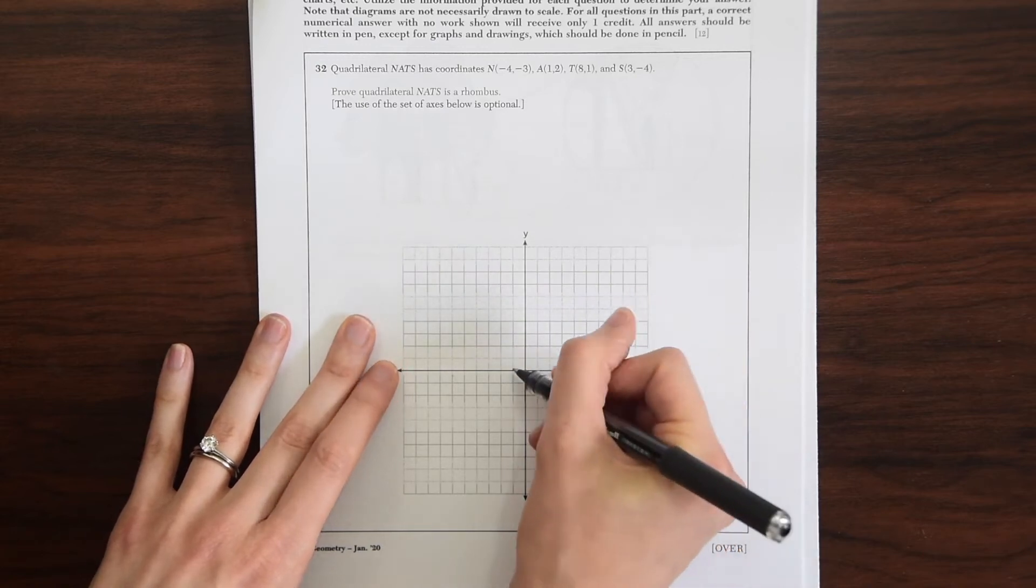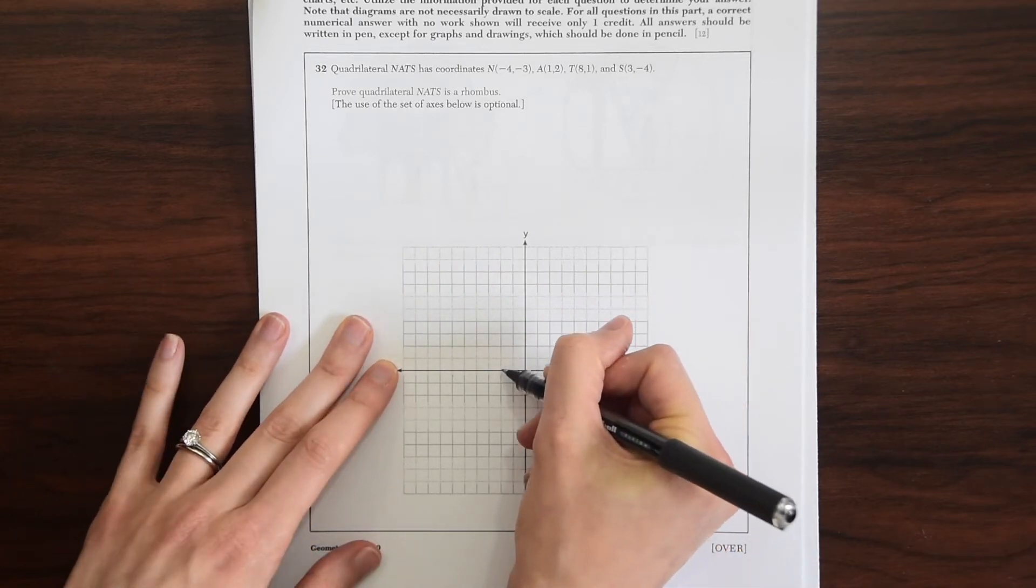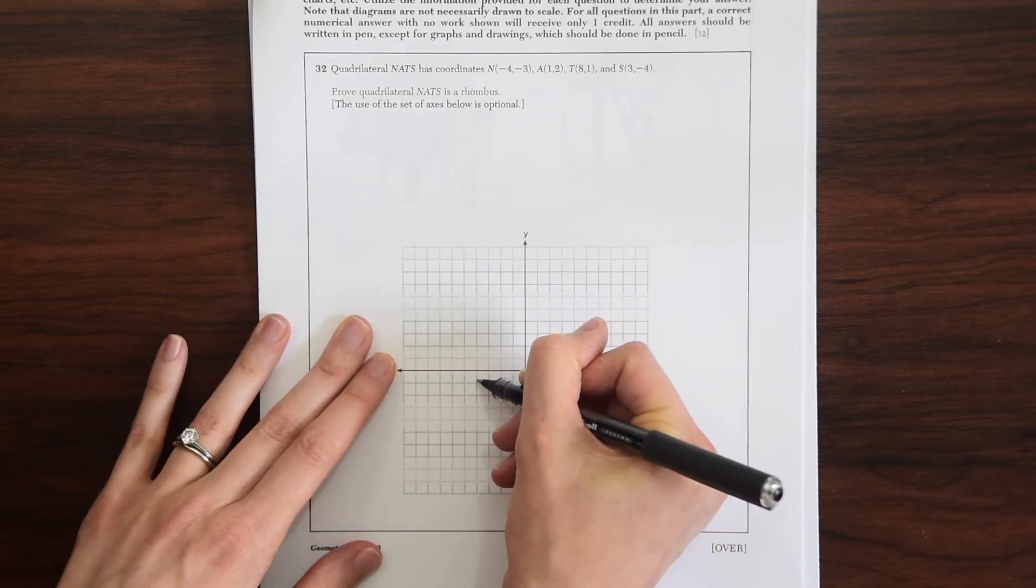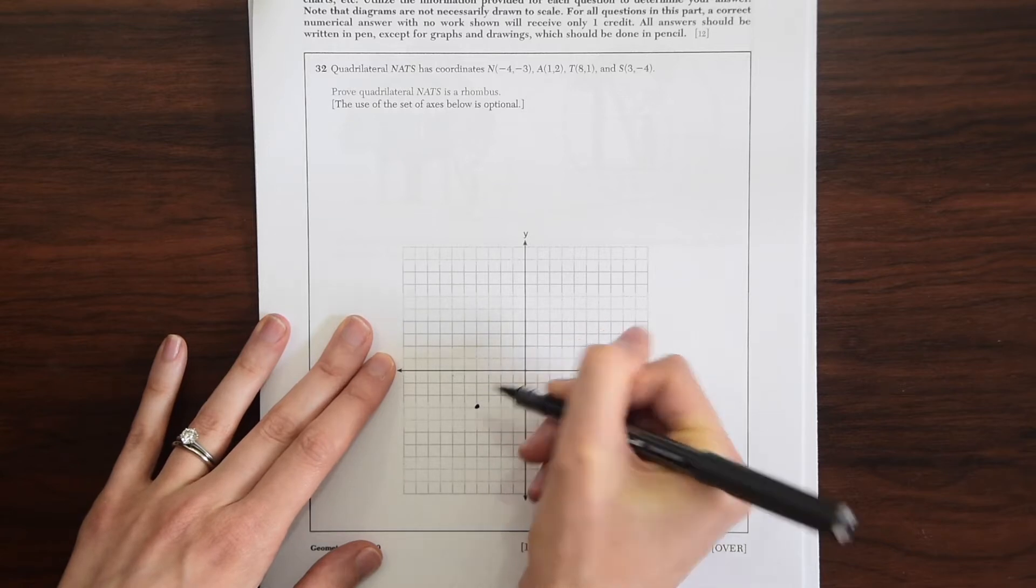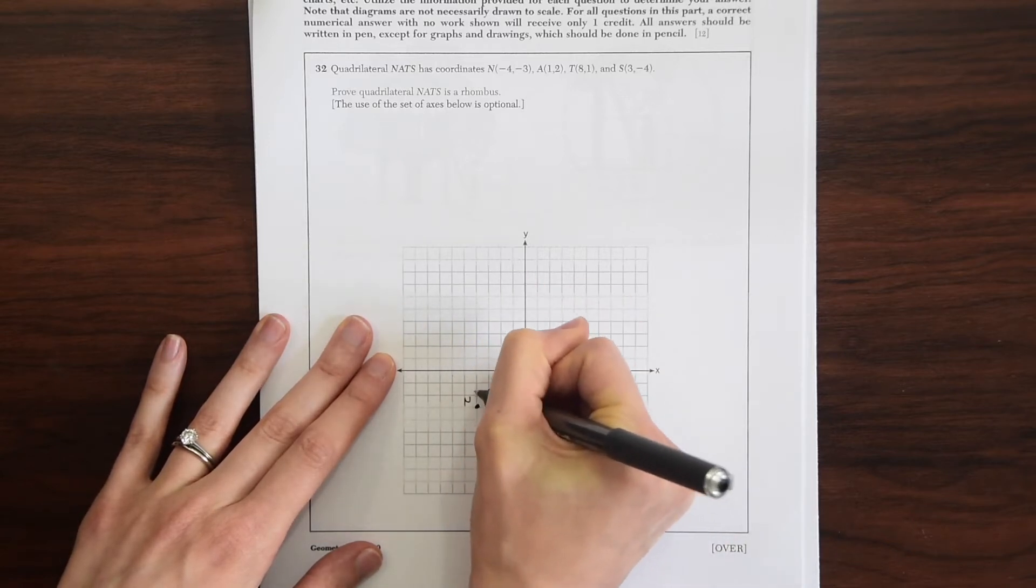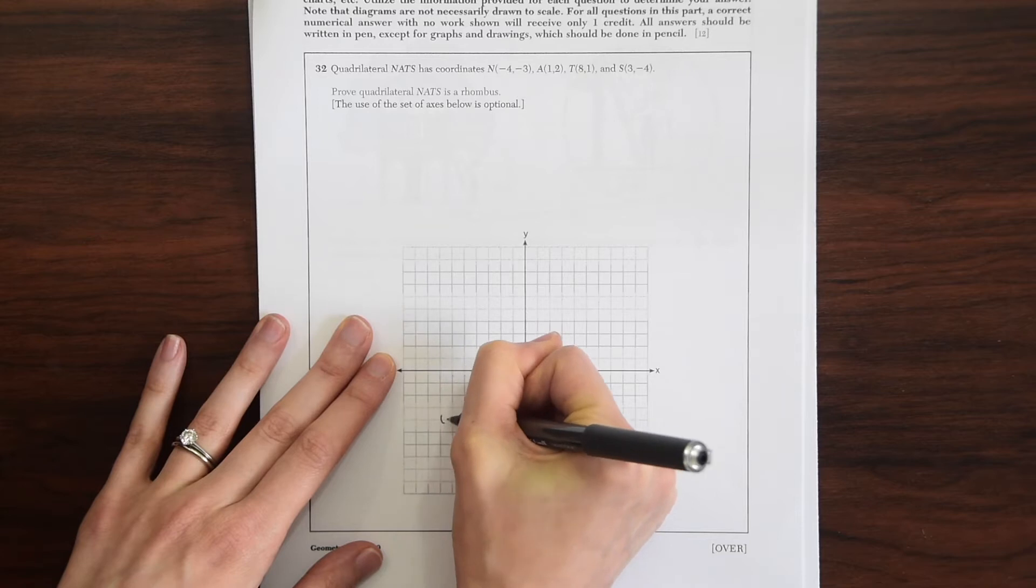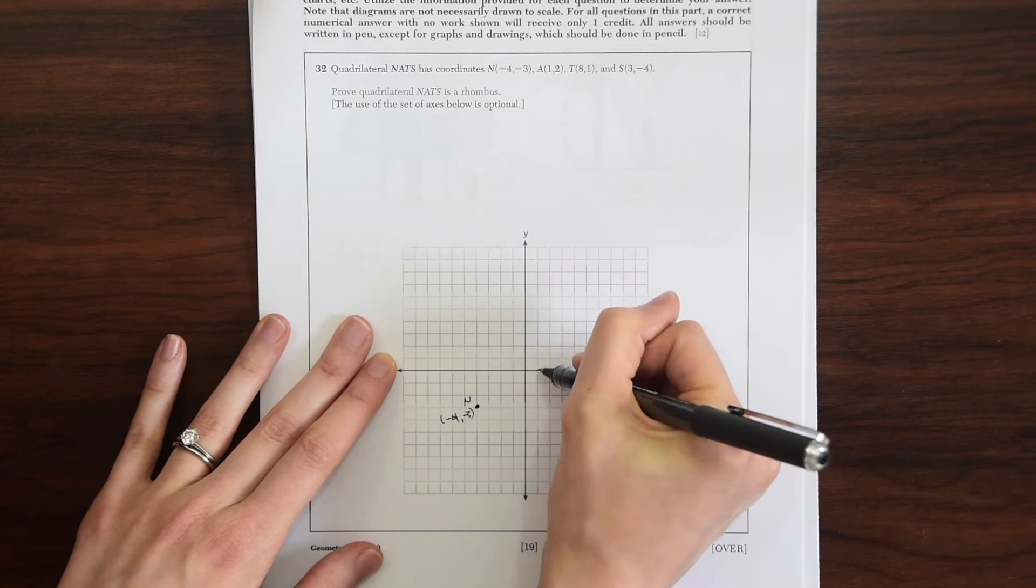So we have N is equal to (-4,-3). So we have 1, 2, 3, 4, 1, 2, 3, and we'll label this N. I'm just going to put the coordinate point also. A is (1,2).